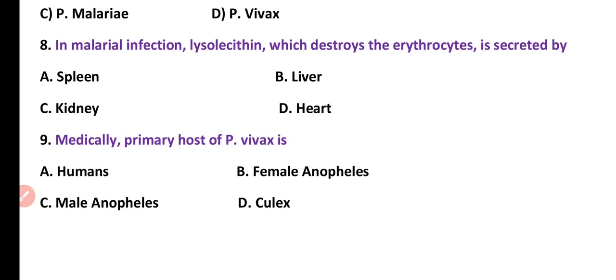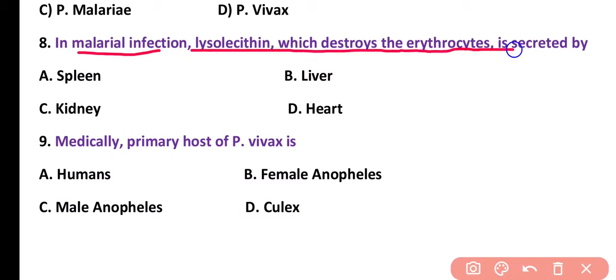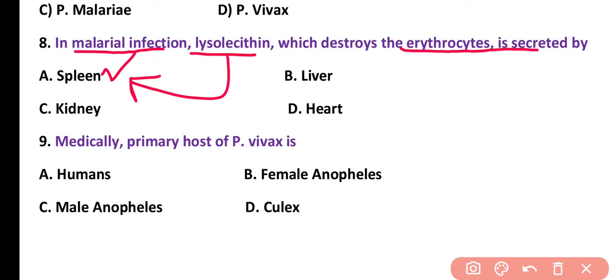Question number 8. In malaria infection, lysolecithin which destroys the erythrocyte is secreted by: spleen, liver, kidney, or heart. Correct answer is option A. During malaria infection, erythrocytes are destroyed by lysolecithin which is secreted from the spleen.